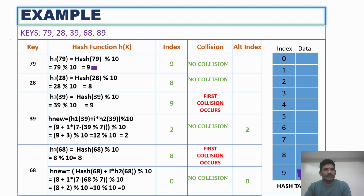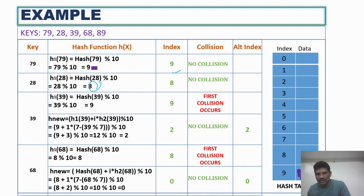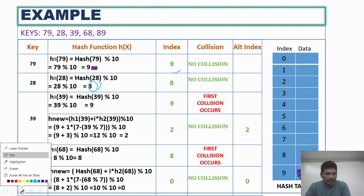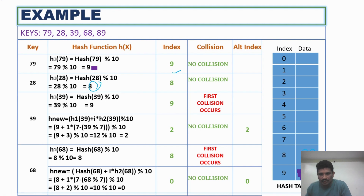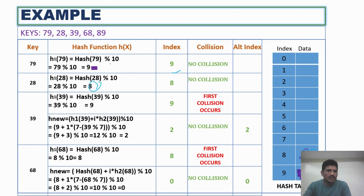Next, for h(28): 28 modulus 10, the remainder is 8. Index 8 is free, so we can store 28 at index 8. Both 79 and 28 have been placed in the hash table without any collisions.